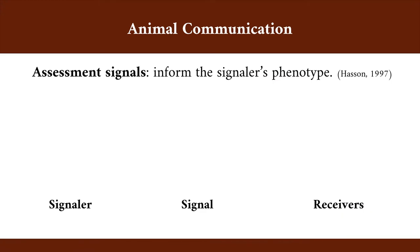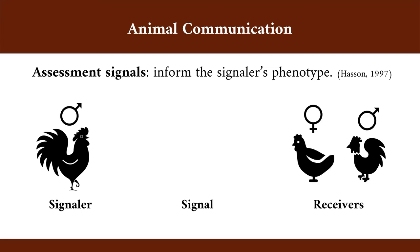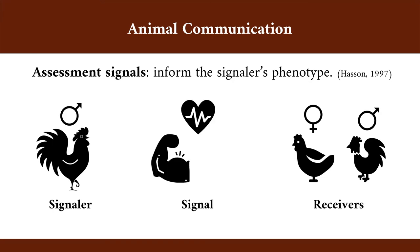These goals can be achieved by using assessment signals, which inform the signaler's phenotype to the receivers. For instance, if a male wants to attract a female and drive other males away, it can use signals that allow these receivers to assess how healthy it is, how strong it is, or how much energy it has, so that receivers can decide whether the signaling male is a good mate or a strong competitor.